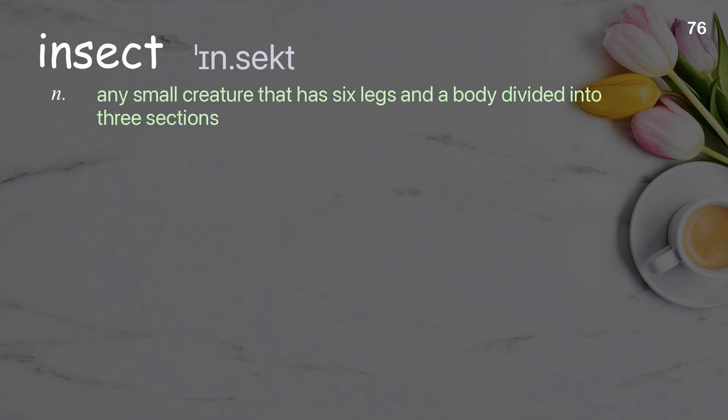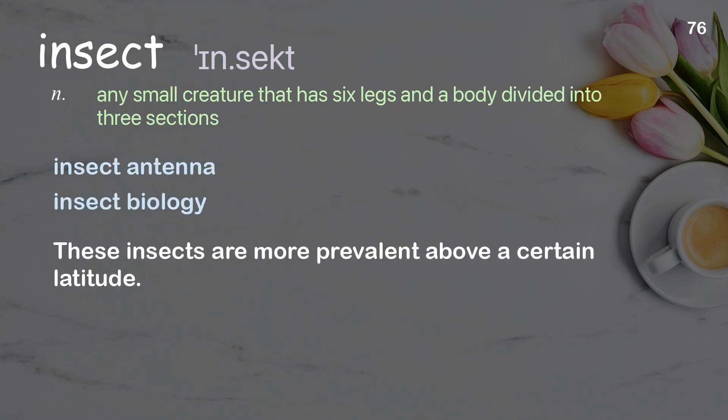Insect: any small creature that has six legs and a body divided into three sections. Examples: insect antenna; insect biology. These insects are more prevalent above a certain latitude.